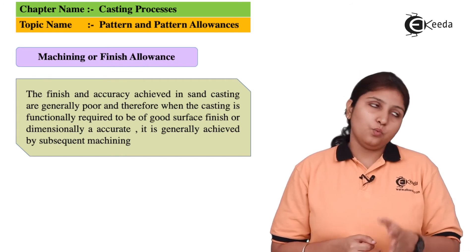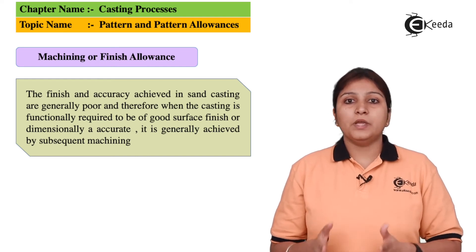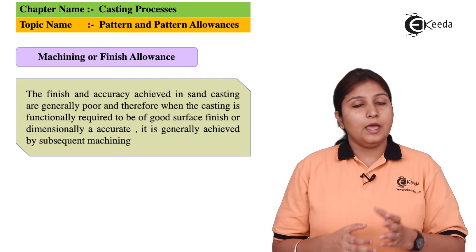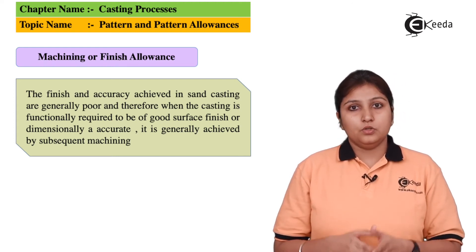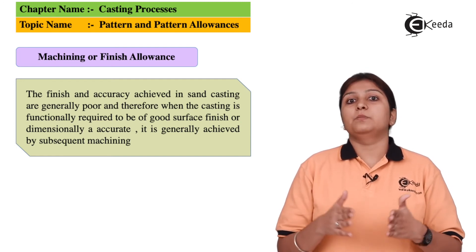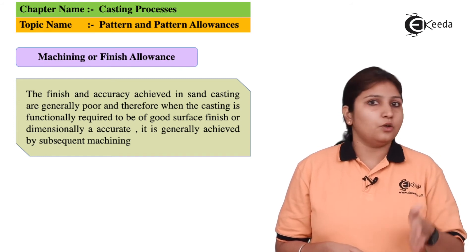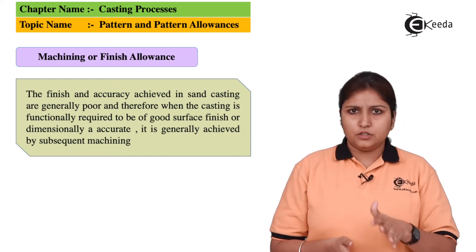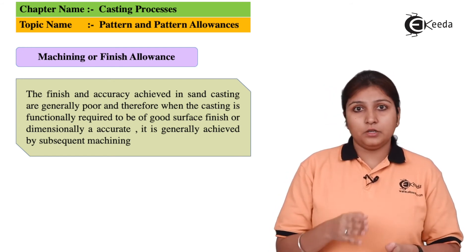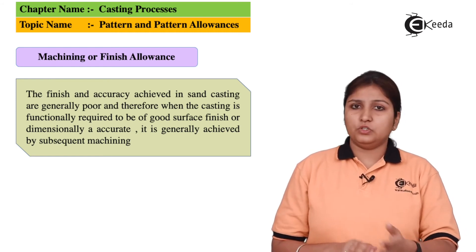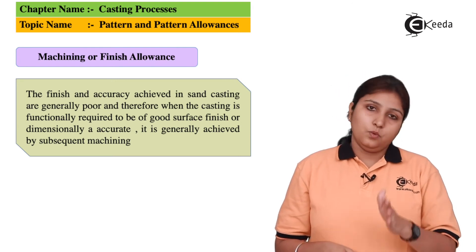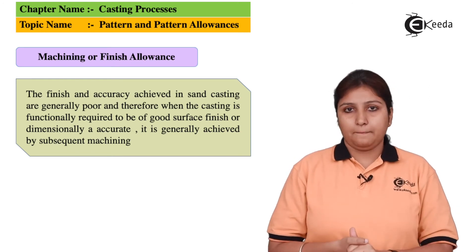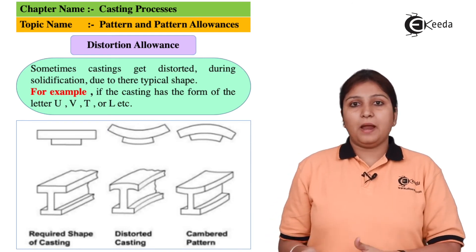The next allowance is machining allowance. When the pattern is made, it is made of a larger size because the object cannot be used as-is — it needs to be cut and finished. During finishing, material gets removed, so if it is made to exact size, excess material gets removed and the part becomes undersized. For that reason, machining allowance is given so the object is made a bit larger. In the table, basic elements like cast iron and magnesium are listed with their dimensions and corresponding machining allowances.